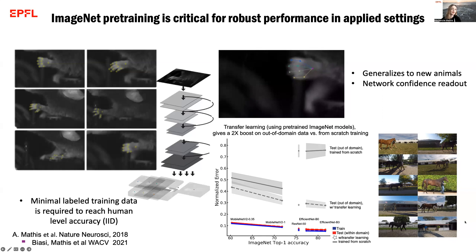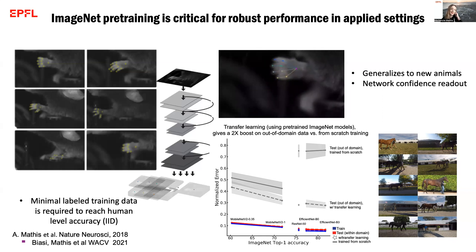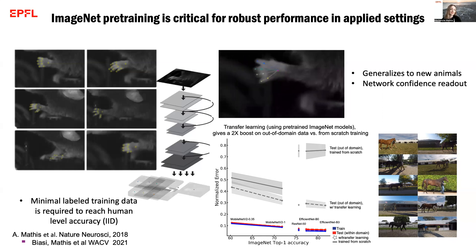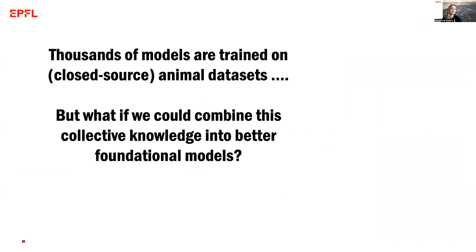Now we find ourselves a few years later, and we know that many users are using these tools to build their own customized, tailored networks. But at the end of the day, this means thousands of models are being trained on oftentimes closed-source animal datasets. But what if we could combine all of this collective knowledge and data into better foundational models that might be even better than ImageNet?